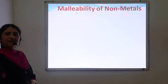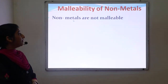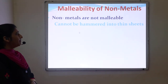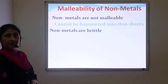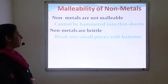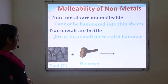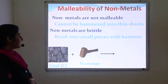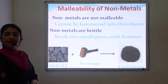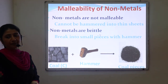Next is malleability of non-metals. Non-metals are not malleable in nature, meaning they cannot be hammered into a thin sheet. However, they are brittle in nature, meaning they break into smaller pieces with a hammer. For example, coal that contains the non-metal carbon — when hammered, it converts into coal pieces instead of a thin sheet. That is why non-metals are not malleable in nature.